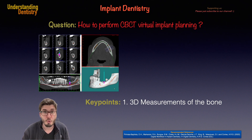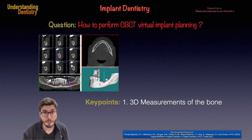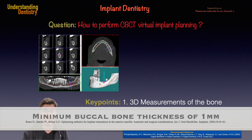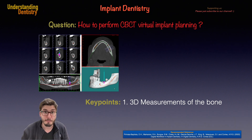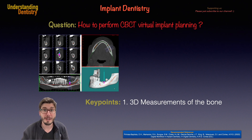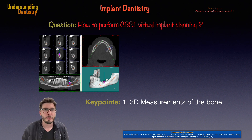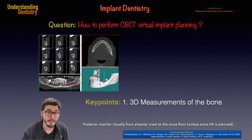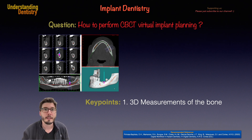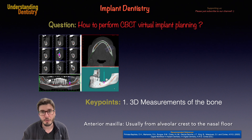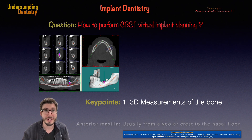These are true one-to-one measurements of the alveolar bone. It's very important to remember that for the bone width, we should leave at least 1mm buccal and 1mm lingual of remaining bone after we plan our implant. The bone height available can be measured from the alveolar crest to the next important anatomical structure to avoid. On the posterior maxilla, we measure from the alveolar crest to the sinus floor, and in the anterior maxilla, from the alveolar crest to the nasal floor.